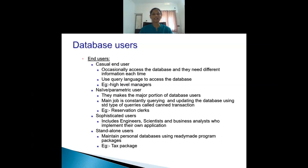The second type of end users are naive or parametric end users. These form the major portion of database users. Their main job is to constantly query and update the database using standard queries, and those standard queries are known as canned transactions. An example is a reservation clerk who uses a fixed set of queries to check room or ticket availability.